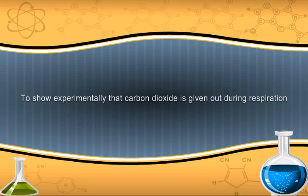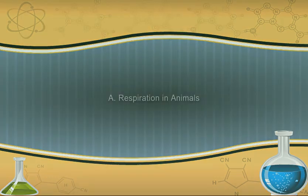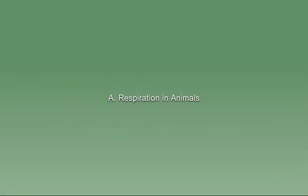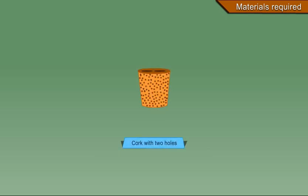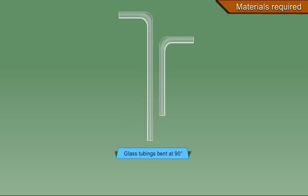To show experimentally that carbon dioxide is given out during respiration. Respiration in animals. Materials required: freshly prepared lime water in a test tube, cork with two holes, glass tubings bent at 90 degrees.